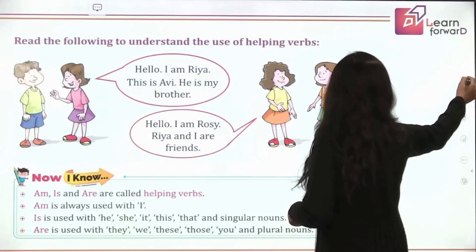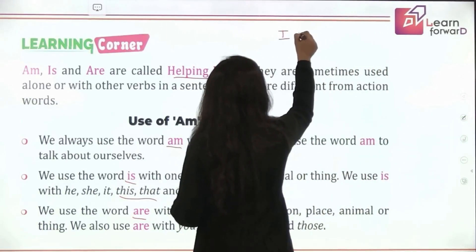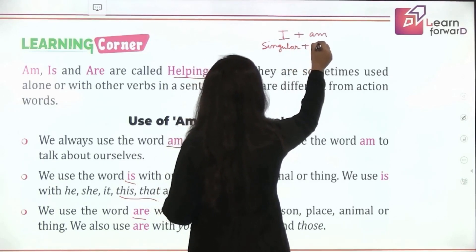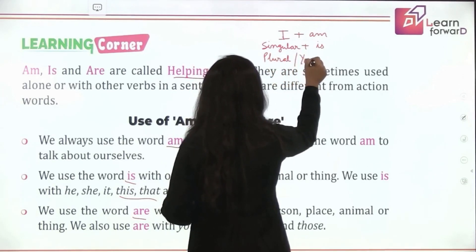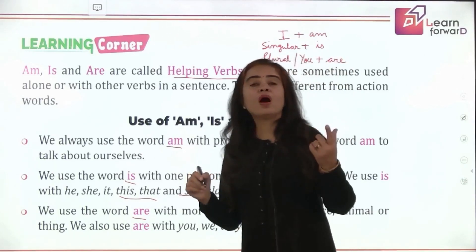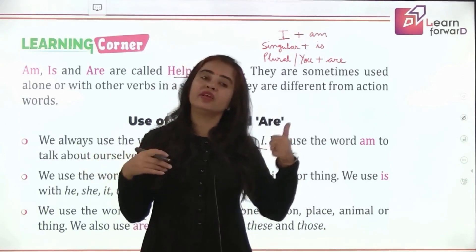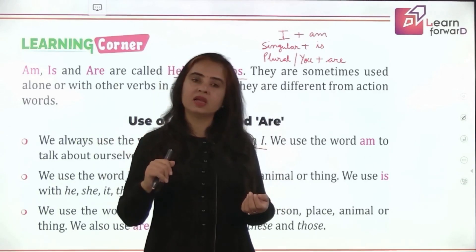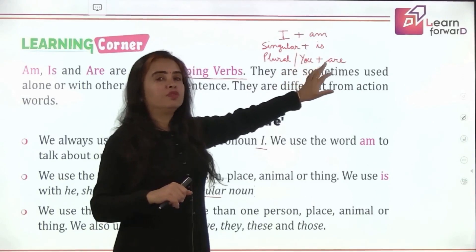Let us quickly write this in short. With 'I', you use 'am'. With singular, you use 'is'. With plural, you use 'are'. And students, remember — even 'you', whether singular or plural, we always use 'are'. I say 'you are my student' — that means I am talking about one student — and 'you are my students' for many. Whether one or many, I am using 'are'. So: I → am, singular → is, plural and you → are.